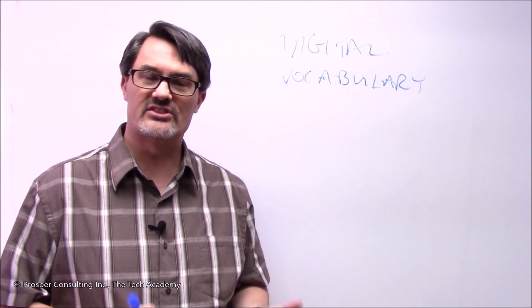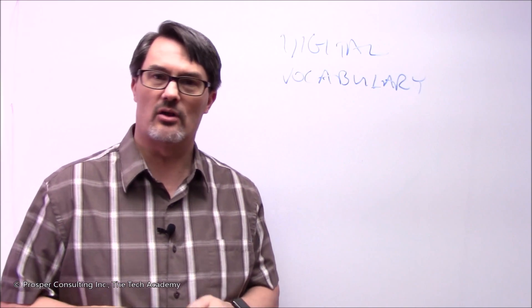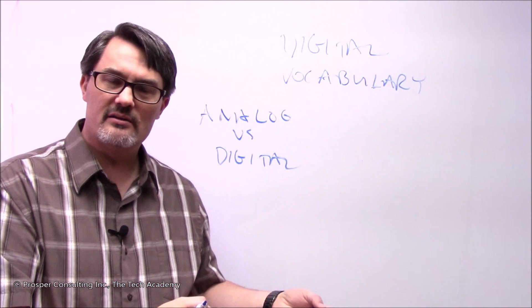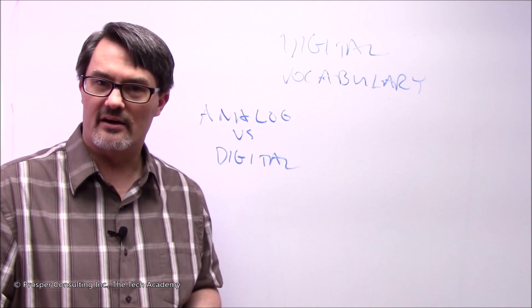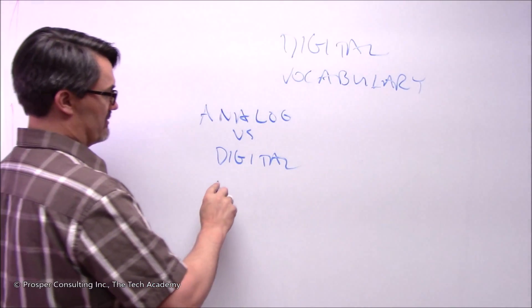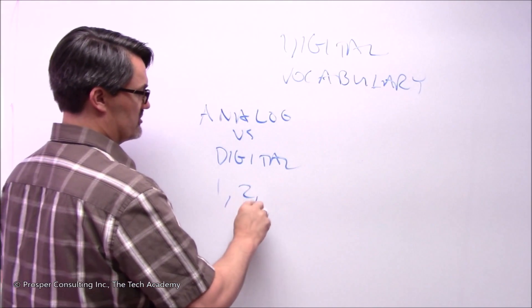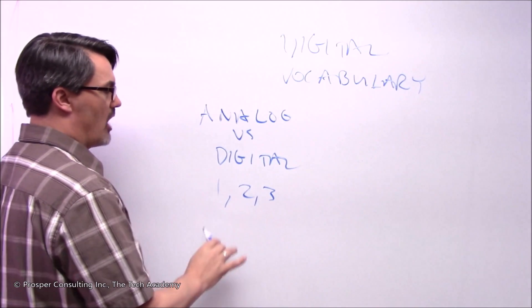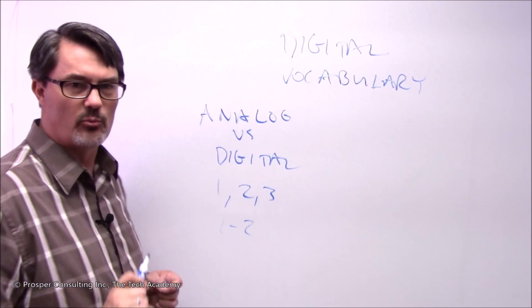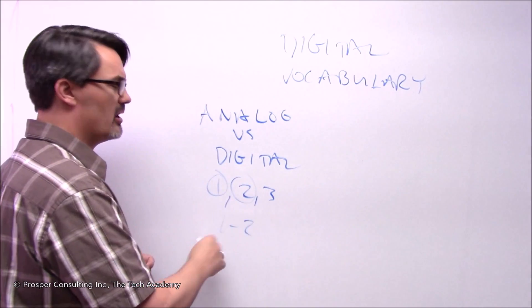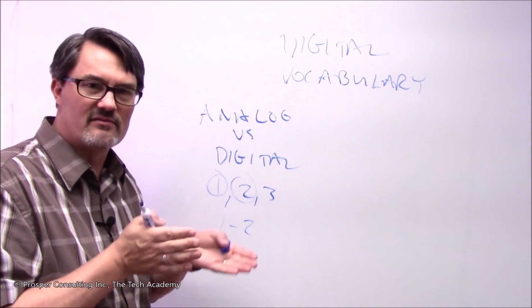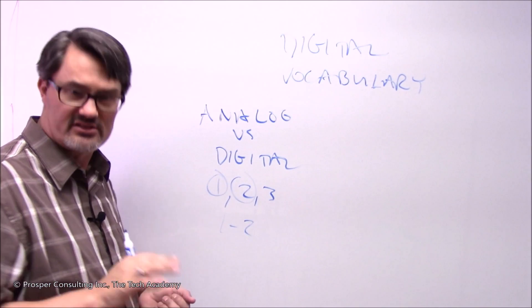The best way to understand the concept of digital is to look at it in comparison to the word analog. Digital simply means a machine that operates on data that has discrete values — this could mean it operates on numbers like one, two, three, but not some vague value in between. It can work with a one or a two, but not somewhere in between; it needs discrete, exact values to operate.